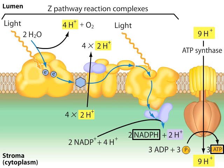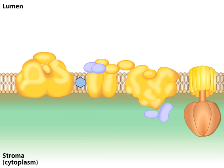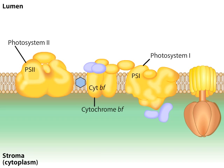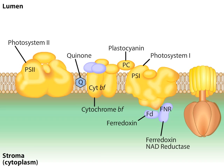The Z-pathway, which is found in cyanobacteria and chloroplasts, uses large membrane-bound complexes called Photosystem I, Photosystem II, and Cytochrome BF. The pathway also uses mobile components: quinone, plastocyanin, ferredoxin, and ferredoxin NAD reductase.